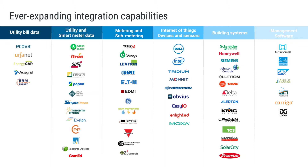Switch Automation's experience in integrating with subsystems and building management systems extends across a large range of major manufacturers — Honeywell, Johnson Controls, Siemens, Eaton for metering, and the list goes on. We're able to integrate with any system that has an open integration protocol, enabling you to scale the platform across your entire portfolio fast, delivering immediate value.